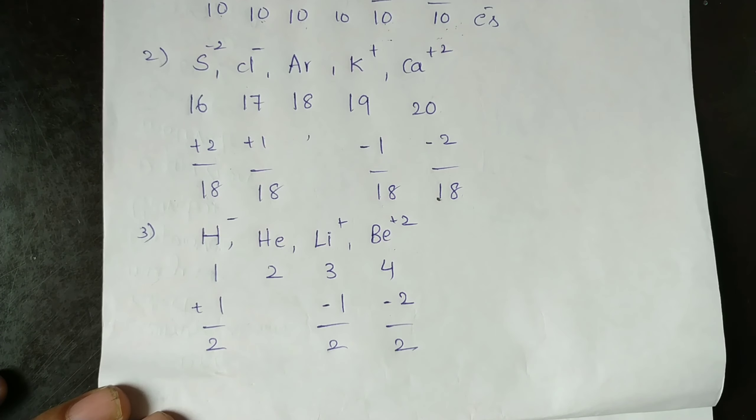Example 3: H⁻, Helium, Li⁺, Be²⁺ shows an isoelectronic series. Hydrogen has atomic number 1, helium 2, lithium 3, beryllium 4.